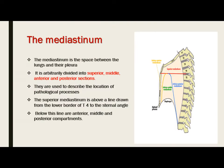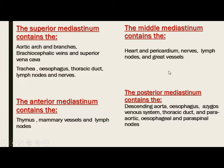The mediastinum is derived from a Greek word meaning standing in the middle, in between the two lungs and their pleura. It is divided into superior, anterior, middle, and posterior divisions by an imaginary line passing from the sternal angle anteriorly to the T4 vertebra posteriorly. The structures located above this line are known as the superior mediastinum, such as the aortic arch and its branches, brachiocephalic veins, superior vena cava, trachea, esophagus, thoracic duct, lymph nodes, and nerves.